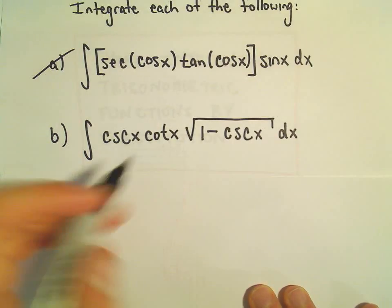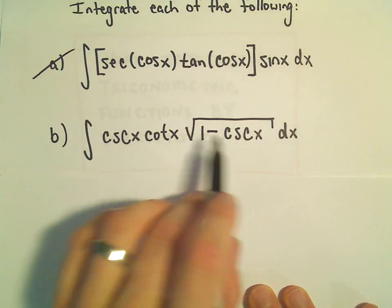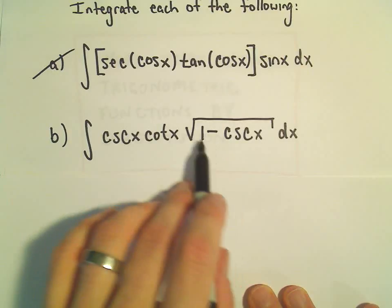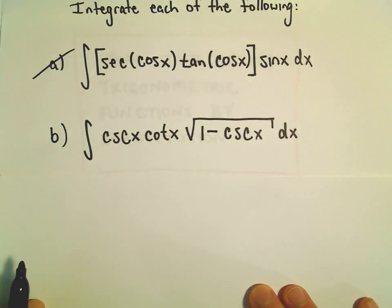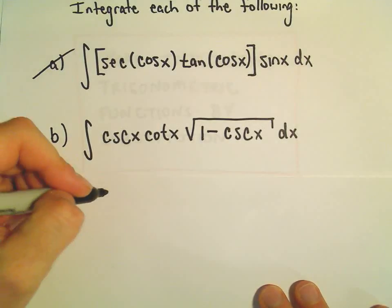And I could just pick u to be cosecant, but then I would have the square root of 1 minus u left over. And I still really wouldn't know what to do with that. I think I'd actually have to do another substitution.